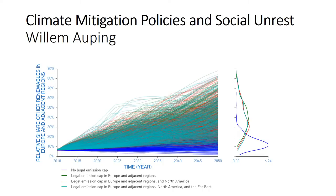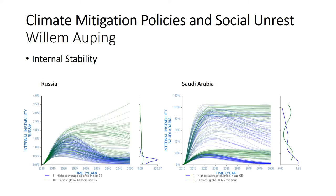The model also addressed internal country stability. Willem concluded that the most resource-dependent countries, particularly in the Middle East, were most vulnerable to climate policies. Russia, Kazakhstan, and Algeria were less vulnerable because their more diversified economies made them less dependent. He also concluded that investing in renewables now leads to more resilience later.